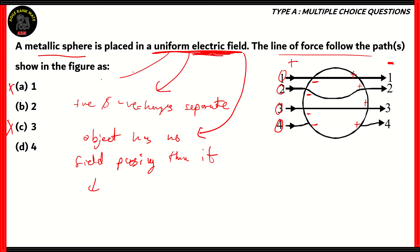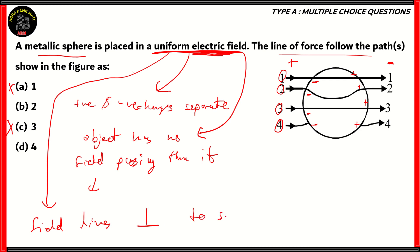Another important property of electric fields is that field lines are perpendicular to the surface of the object. Looking at option two, the field lines go around the object but are parallel to it, so option two is incorrect. Option four is the correct answer — the field line curves so that it is perpendicular to the surface of the sphere at the point of contact, and when it comes out the other side it is still perpendicular. Therefore, option four is the correct option.